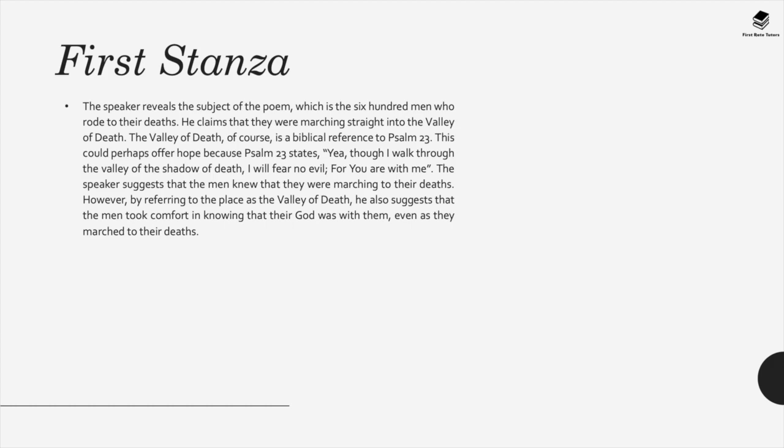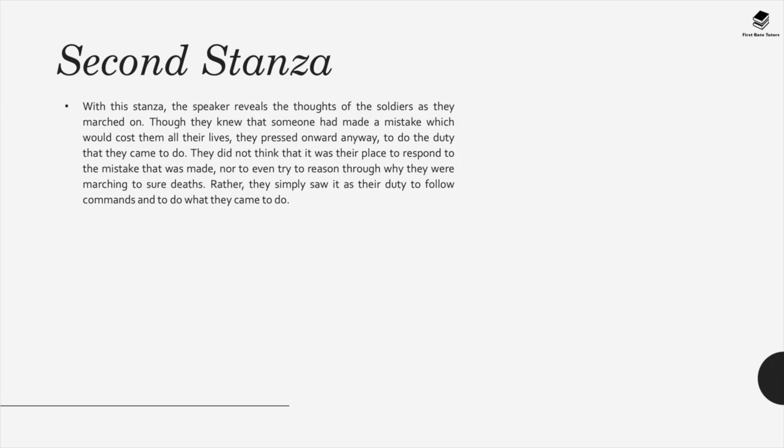In the second stanza, the speaker reveals the soldiers' thoughts as they march. Though they know someone has made a mistake that will cost them their lives, they press on. This poem is based on a specific episode in the Crimean War where, acting on wrong orders, around 600 men charged a far larger and better-prepared Russian army. Despite realising they may die and have acted on false information, they still charge quite valiantly, seeing it as a duty to follow the commands they've been given.